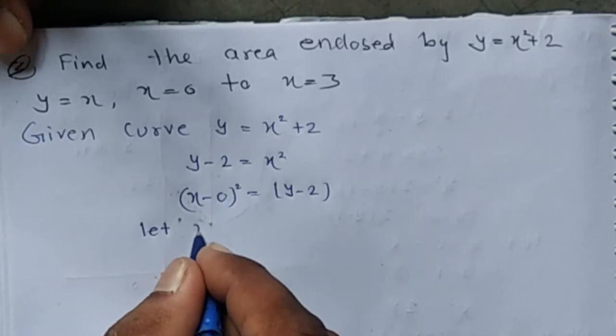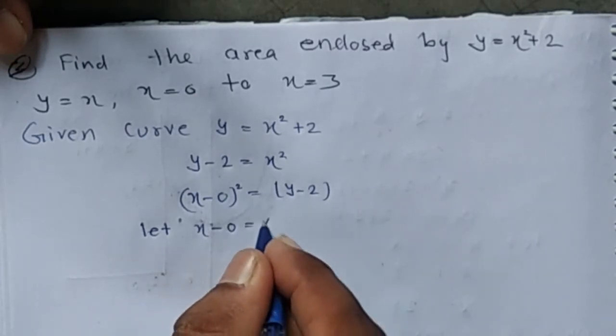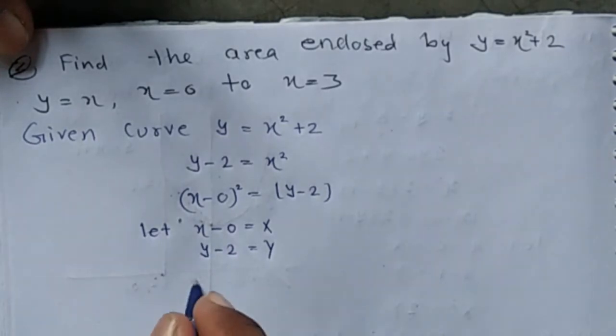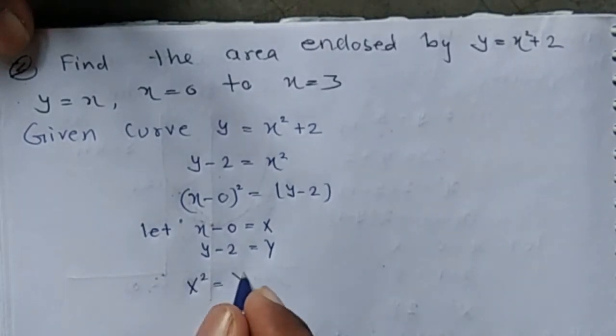Let x minus 0 be capital X, y minus 2 be capital Y. Then it is x squared equals Y.